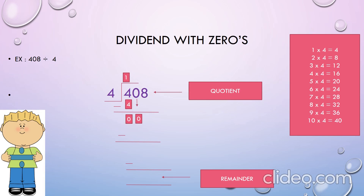Now here we have 0. Let's compare 0 with 4. As 0 is less than 4, we have to multiply 0 with 4. So write 0 in the tens place of the quotient. 0 fours are 0, so write 0 below 0. Now 0 minus 0 is 0. Now let's bring down 8. By using the tables of 4, we will get the product 8 by multiplying 2 with 4. So let's write 2 in the ones place of the quotient and 8 below 8. Subtract 8 from 8 — that is 8 minus 8 equals 0. In this example, the quotient is 102 and the remainder is 0.